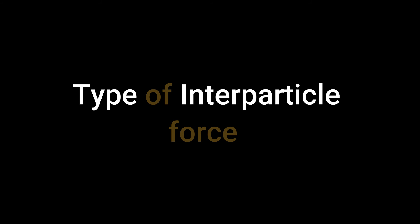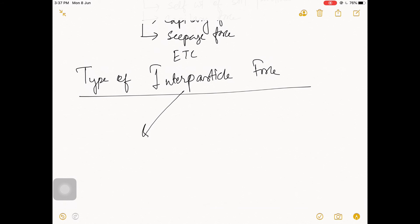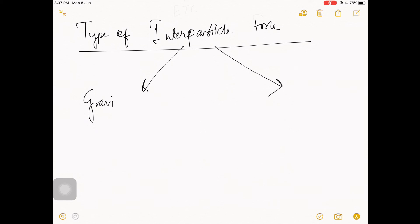So how many types of interparticle forces act in a soil mass? Basically, there are two types: number one is gravitational force, and number two is surface force.